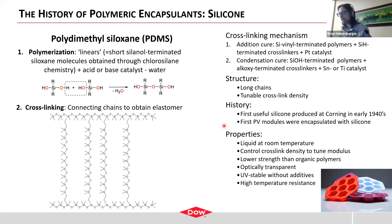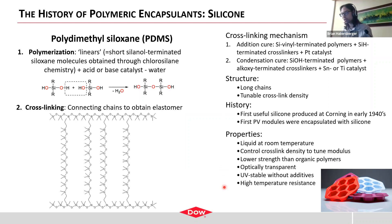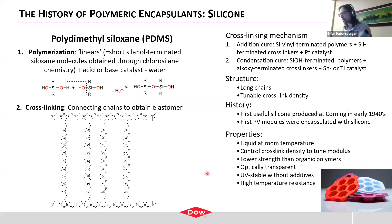PDMS has a lot of really interesting and unique properties. It's liquid at room temperature, and in fact liquid across a very broad temperature range. You can control its cross-link density to tune modulus. It has a little bit lower strength than organic polymers, but it's amorphous and liquid, so it's very clear. It's both UV-stable and temperature-stable. If you want a material that's stable in a very broad temperature range with relatively uniform mechanical properties, it's a good choice — which is why it's used in many high-temperature-resistant kitchen applications, like baking molds.